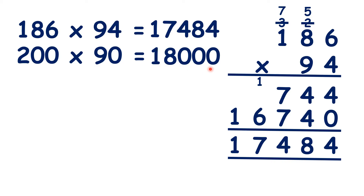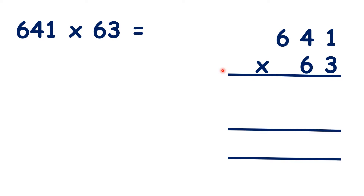It's useful to estimate first, because imagine if we had forgotten that we need this zero in the units — we would be adding 744 and 1,674, and when we got our answer, we would realise it wasn't close to 18,000, so we would know we had made a mistake. Now again, let's round first to estimate. What is 641 rounded to the nearest 100? That's 600. And what is 63 rounded to the nearest 10? That's 60.